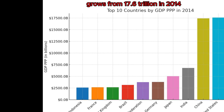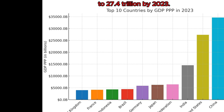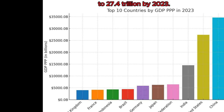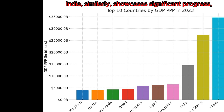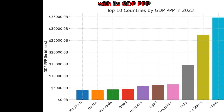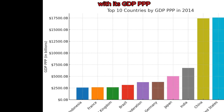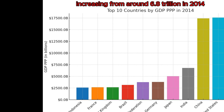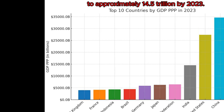The U.S., while maintaining a strong position, grows from $17.6 trillion in 2014 to $27.4 trillion by 2023. India similarly showcases significant progress, with its GDP PPP increasing from around $6.8 trillion in 2014 to approximately $14.5 trillion by 2023.